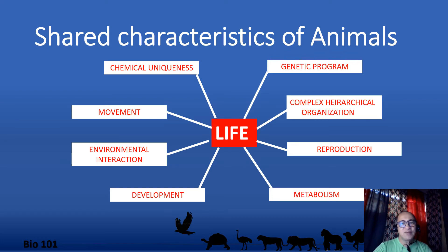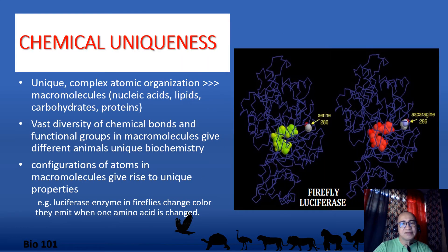Mentioning briefly about these properties may provide a window by which we can further appreciate animal life. We will discuss them one by one. Chemical uniqueness in animals is brought about by characteristic atomic composition that forms very large and complex molecules called macromolecules. Four important macromolecules are recognized in living things: nucleic acids, lipids, carbohydrates, and proteins. These categories differ in their atomic composition, the kinds of chemical bonds, and the roles they serve in living systems.